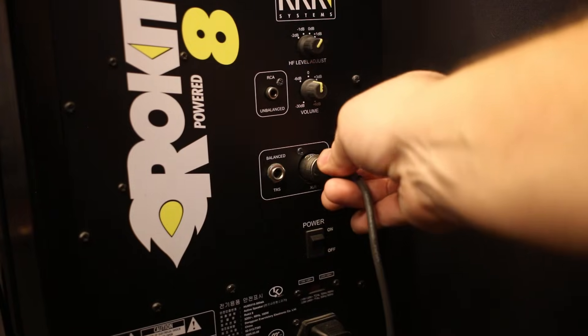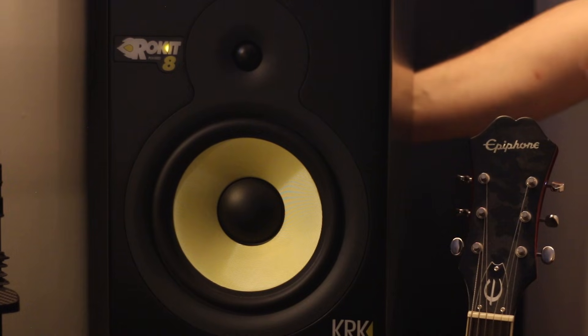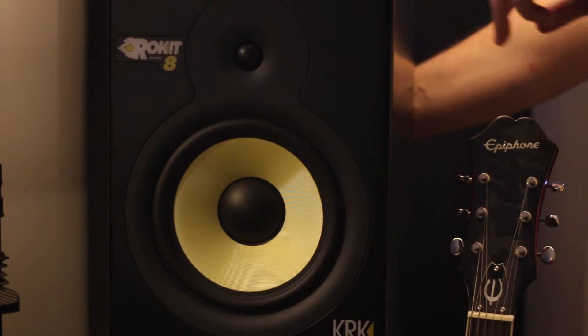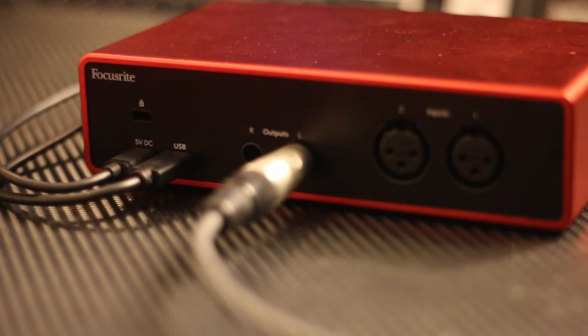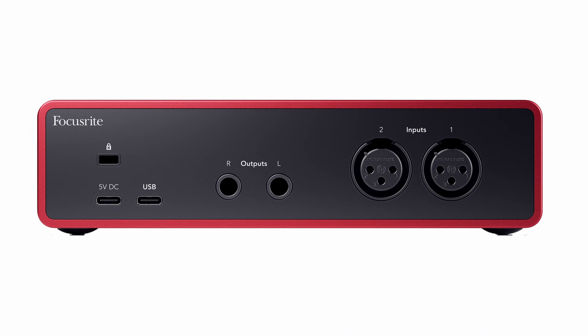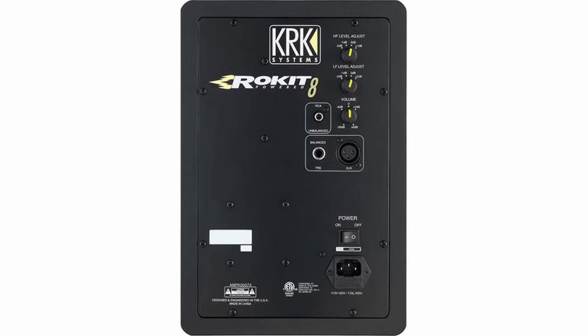If you have a pair of studio monitors, you can go ahead and connect and power them up, but make sure they're switched off first. This will also prevent an accidental burst of sound that may damage the speakers. With the speakers turned off, connect your interface outputs to the inputs on your studio monitors. Audio interfaces will usually have either quarter-inch TRS outputs or XLR outputs, and studio monitors will also either have quarter-inch TRS inputs or XLR inputs. You'll just need to find a cable or adapter that will fit each device.